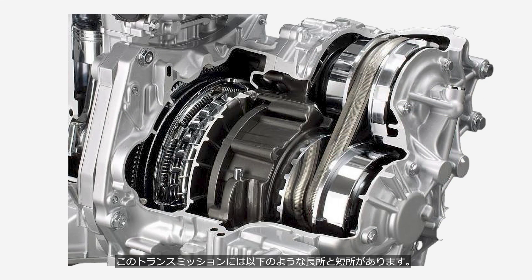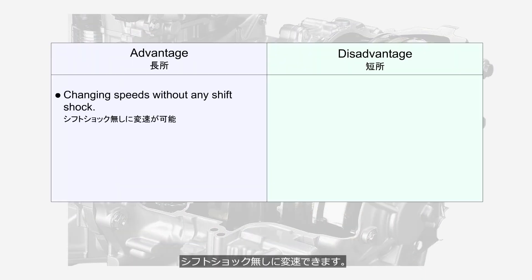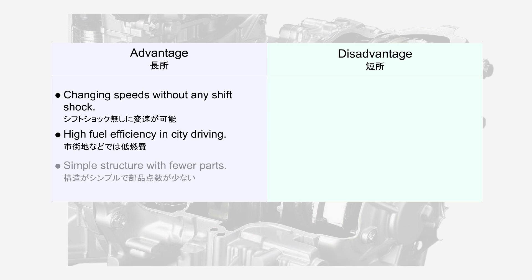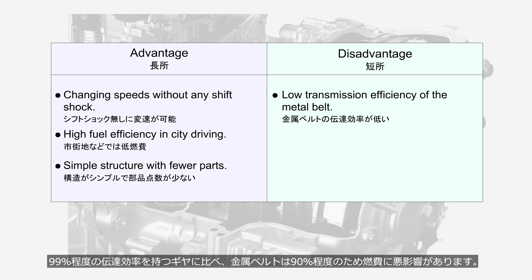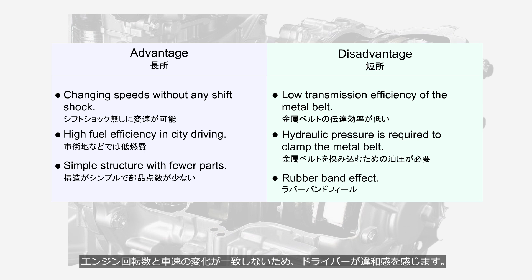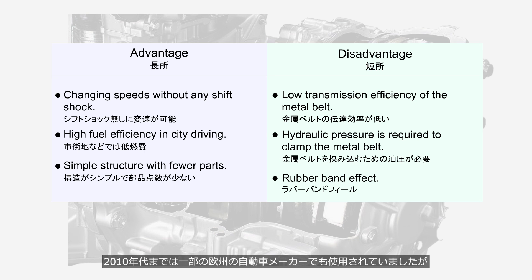This transmission has the following advantages and disadvantages. A CVT can change speeds without any shift shock, and since it can change speeds within the most efficient engine speed range, it offers high fuel efficiency in city driving. It also has a simple structure with fewer parts. However, compared to gears which have about 99% transmission efficiency, metal belts are around 90%, which negatively affects fuel efficiency. It also requires hydraulic pressure to clamp the metal belt, further impacting efficiency. Because the engine speed and vehicle speed do not match during acceleration, drivers may feel uncomfortable — a phenomenon often referred to as the rubber band effect. Until the 2010s, some European automakers also used CVTs, but now only Japanese automakers use them.